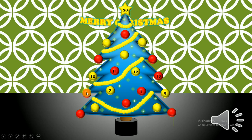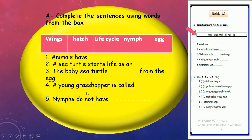Number 6, it's a very big question. We're gonna find it on page 61, Exercise A. Complete the sentence using words from the box. We're gonna find some words here like wings, hatch, life cycle, nymph, egg. Number 1: Animals have what? Can you tell? Hatch or life cycle? Life cycle. Excellent!